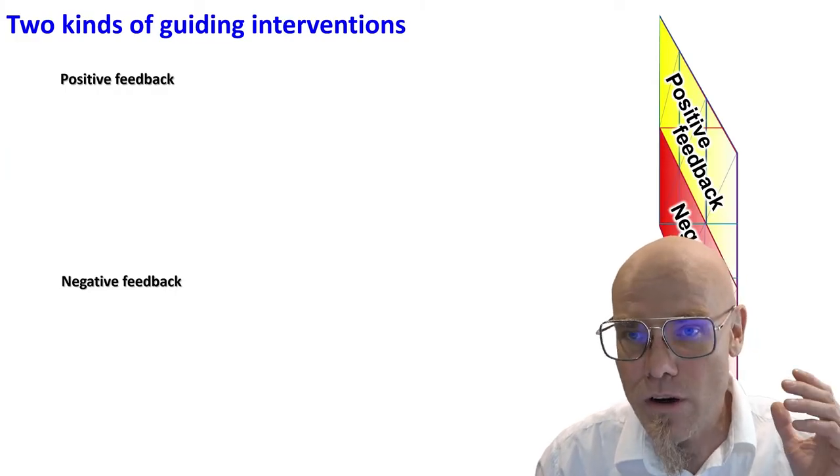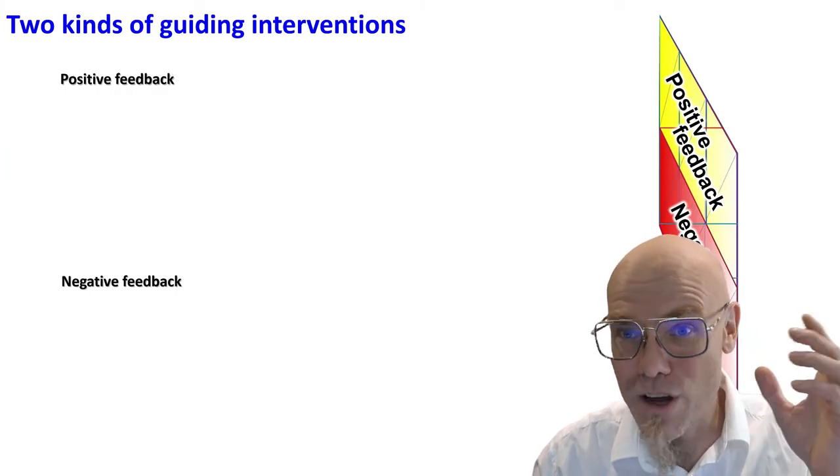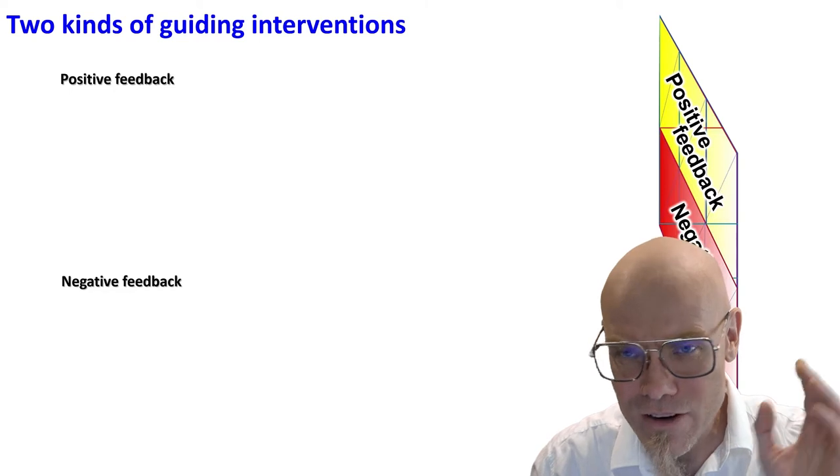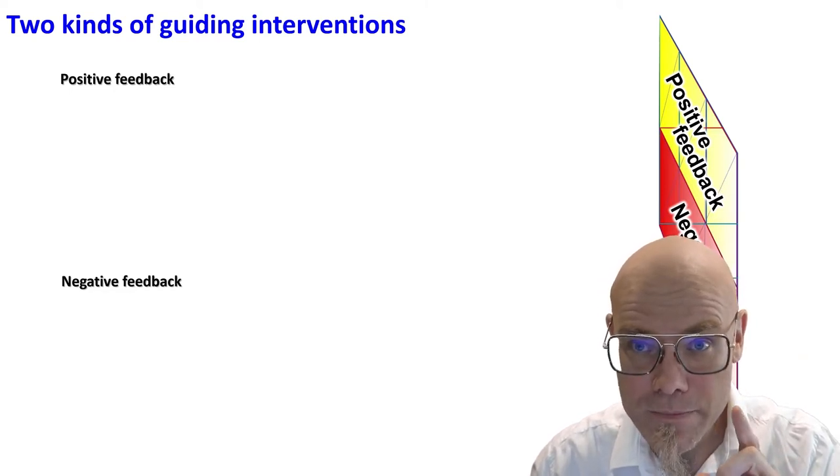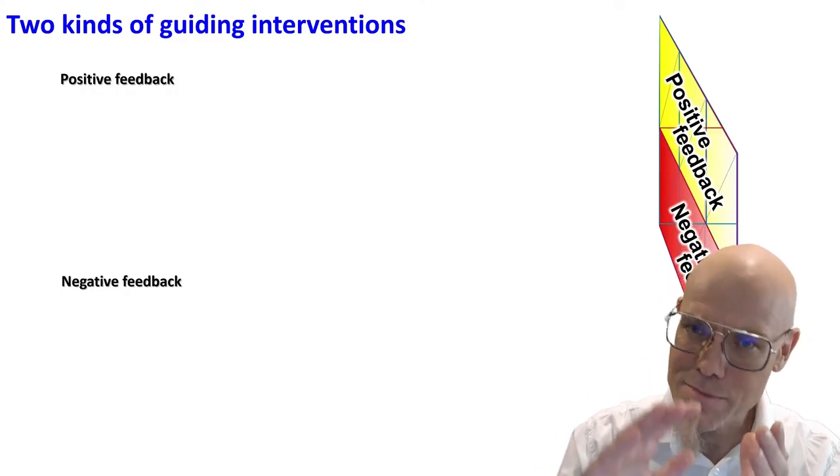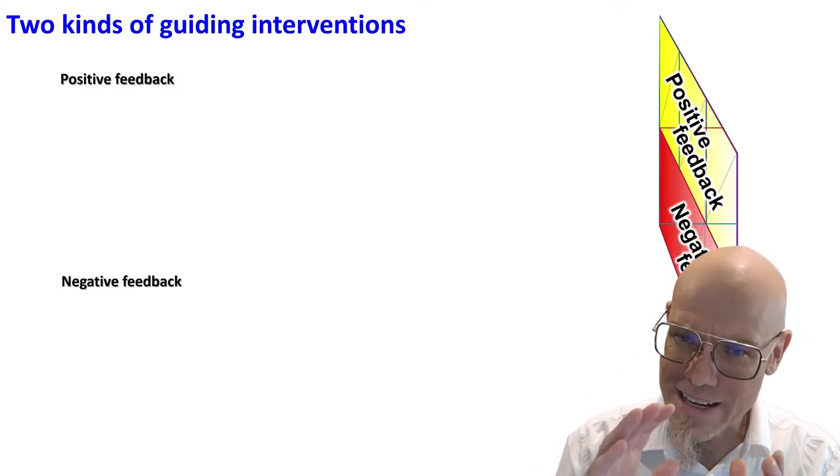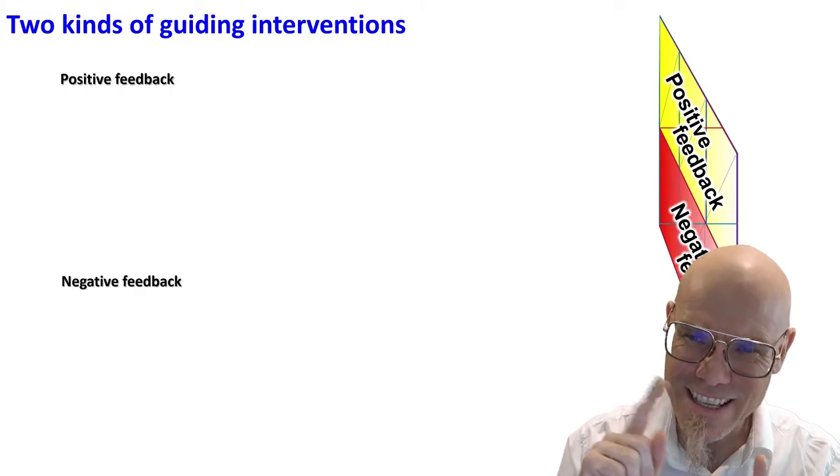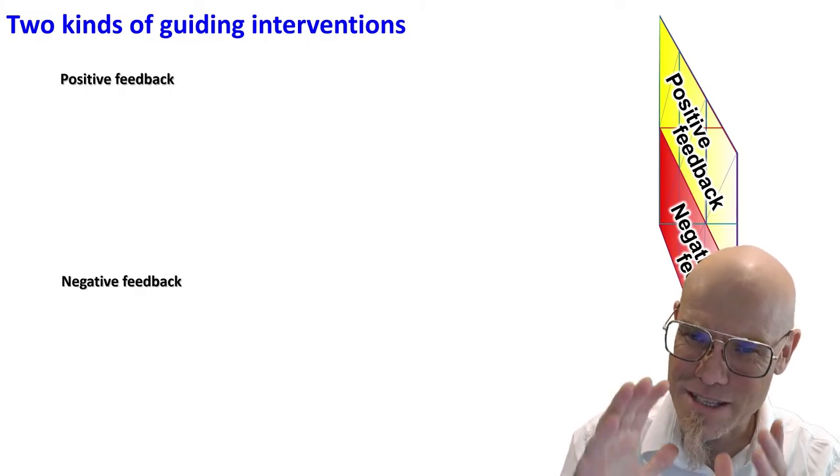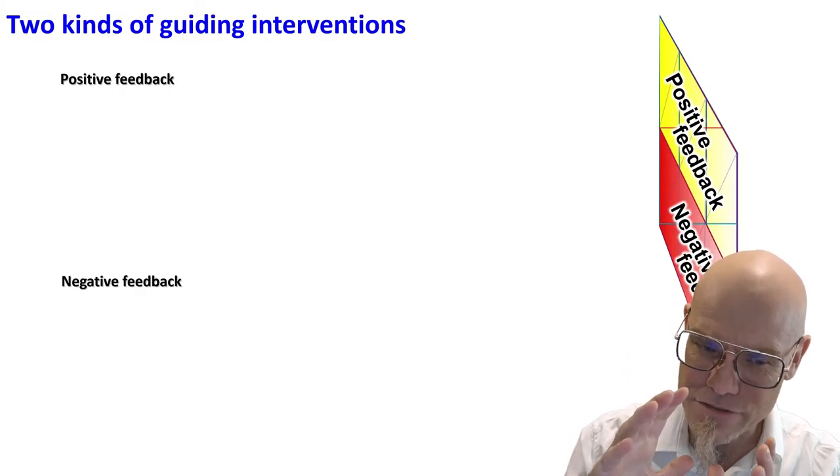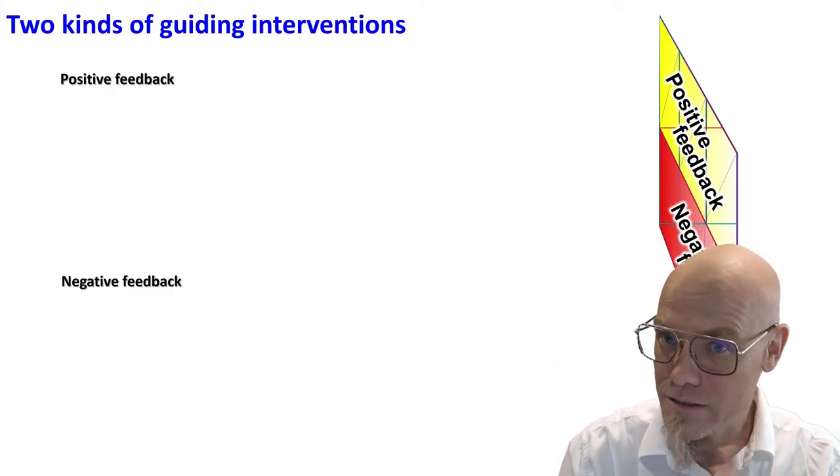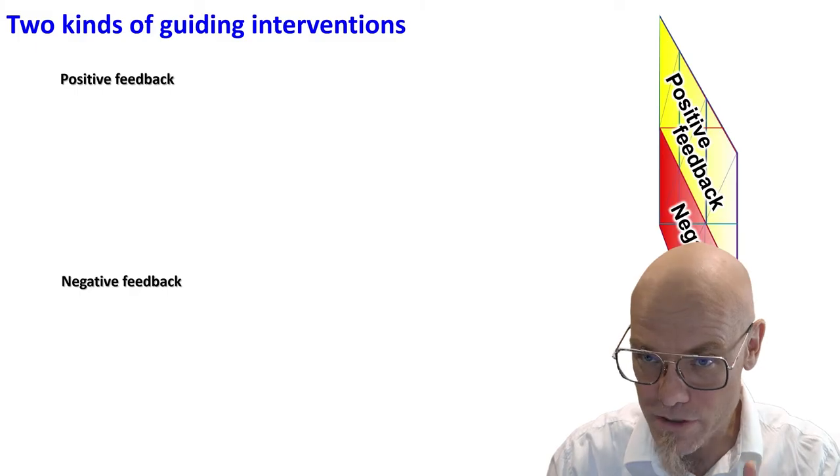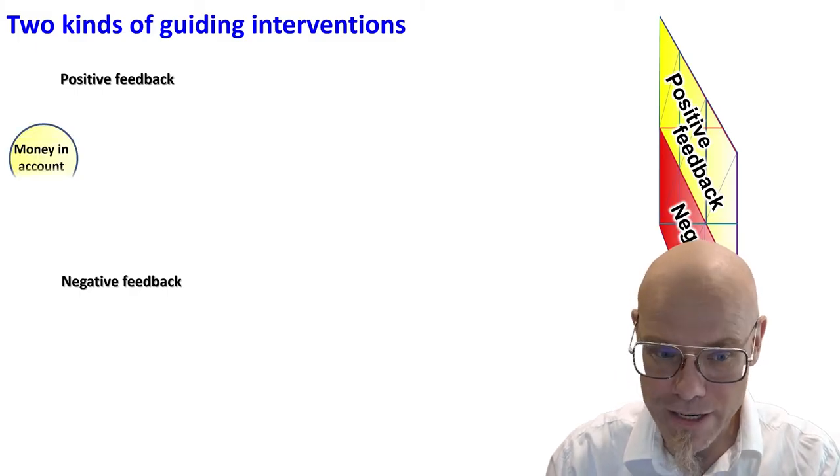Either you can put oil into the fire, blow it up, or water into the fire and turn it out. Both of them are positive feedback. Or you can regulate the fire and keep it in the middle. That is called negative feedback. Funny, huh? So negative feedback doesn't mean turn the fire out. It just means you stabilize the size of it. Positive feedback is either blow it up, oil in the fire, or water and completely extinguish it. Both of that is positive feedback.